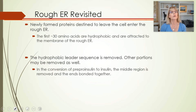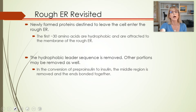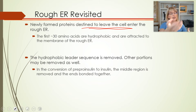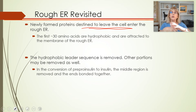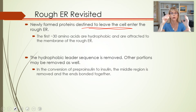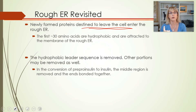The rough endoplasmic reticulum makes special proteins — most of them are destined to leave the cell, either secreted into the area around the cell or into the bloodstream like insulin, or they become part of the cell membrane. So how does a ribosome know whether to make a protein that just goes out, or one that needs to go down onto the rough endoplasmic reticulum?